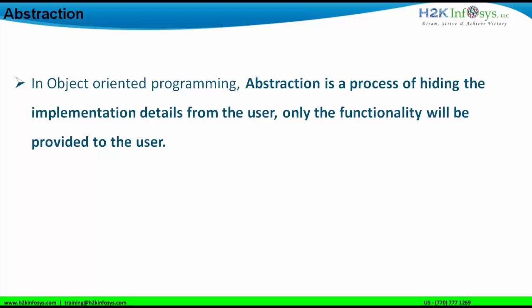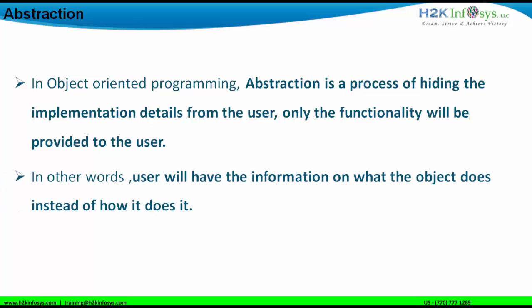What the thing is going to give in terms of result — that is important. Sometimes it is needed that we need to abstract certain classes or certain methods. In other words, the user will have the information on what the object does, instead of how it is doing it.